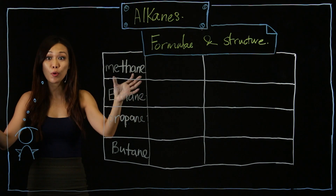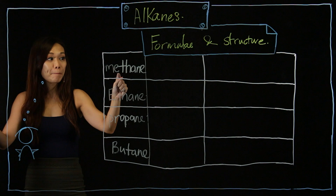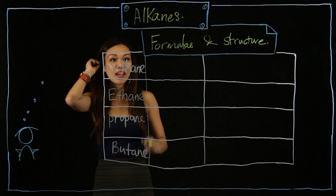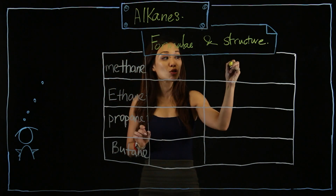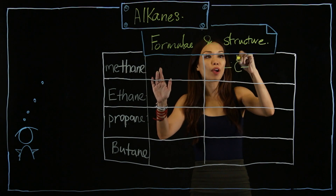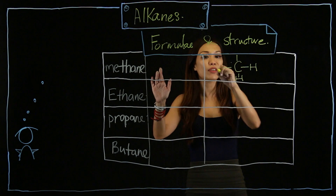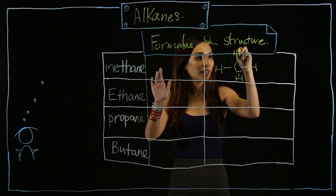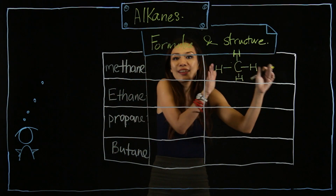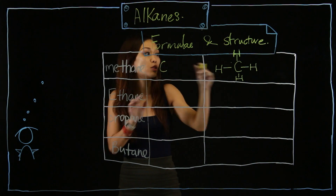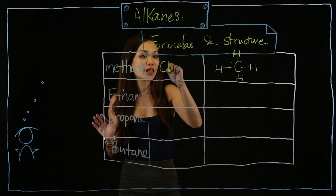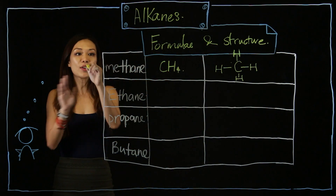Remember the mnemonic: monkey eat proper butter — methane, ethane, propane, butane — and they represent the number of carbon atoms. Methane represents one C. The structure I taught you is CH4. So there's H here, H here, H here, and H here. From the structure, you come up with a formula. One C, and counting four hydrogens gives you CH4.